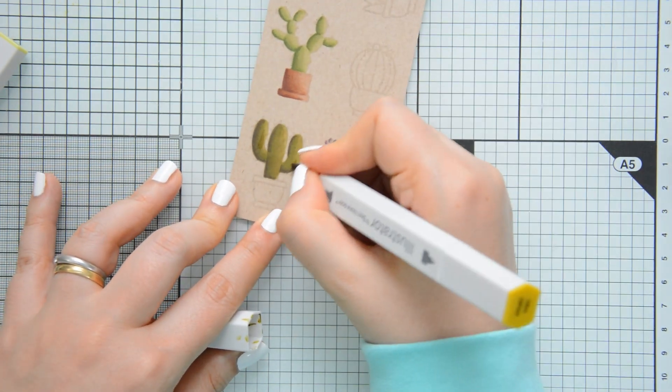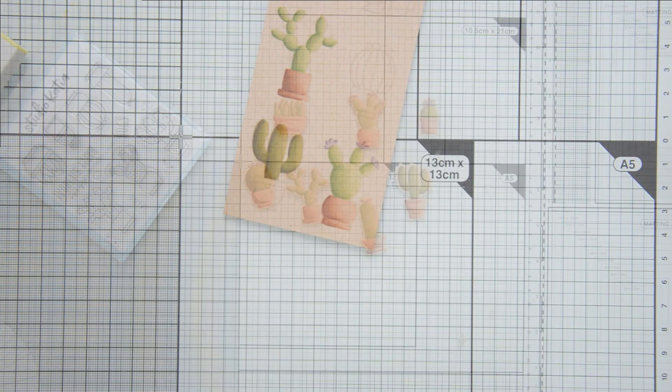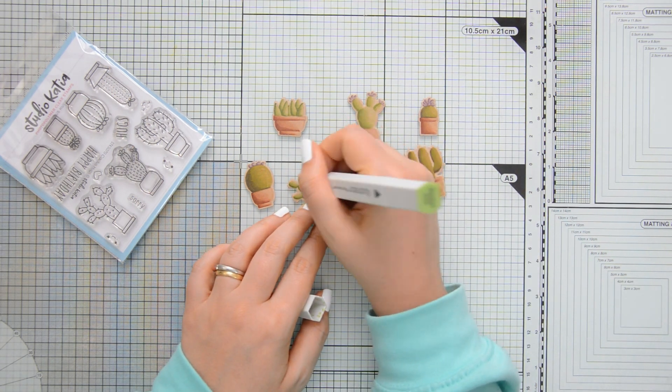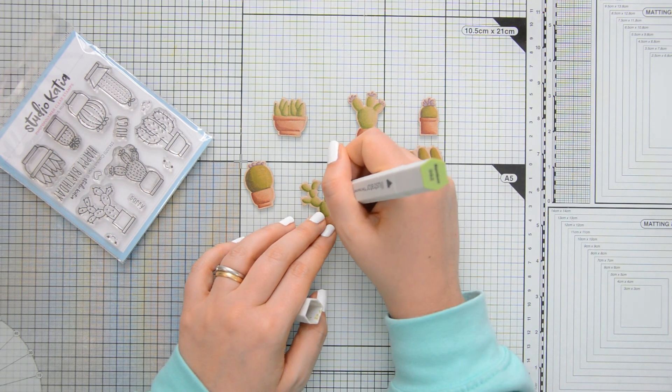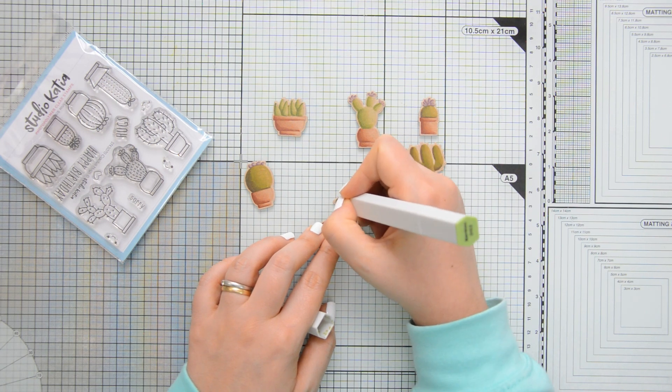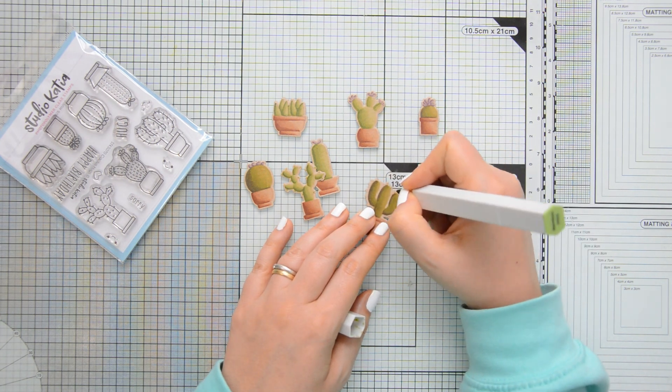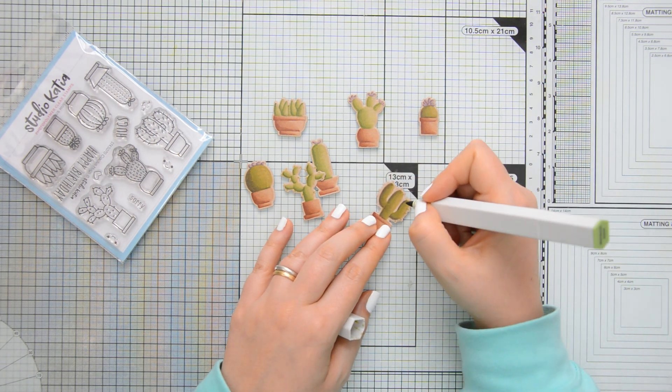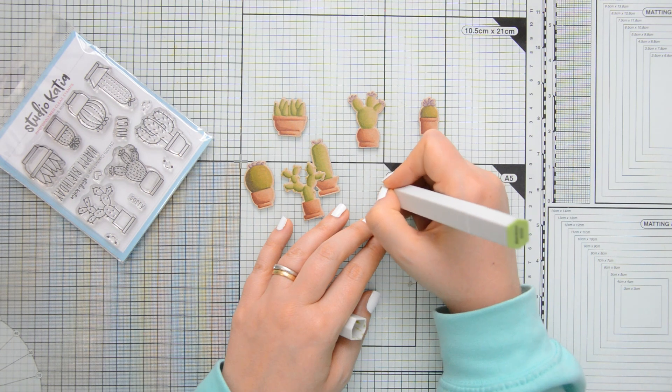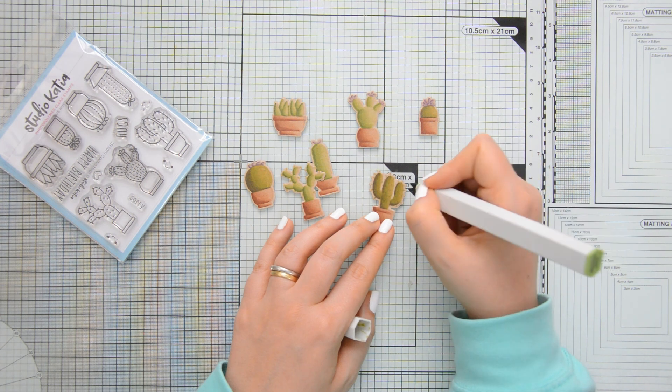Once I was done coloring the images, I die cut them with the coordinating dies. By doing this no-line coloring I did lose a little bit of the detail that you have in the stamped images, and some of it I'm going to recreate now but just for the two cacti where the die also cuts the thorns. I'm just using the stamp packaging as a reference to see where the thorns were added by the illustrator, and I'm using a DG2 marker, so it's a little bit of a light marker, it's like my mid-tone marker, to add the thorns back in these two cacti.